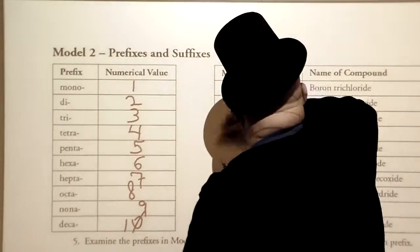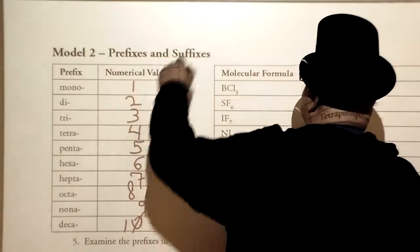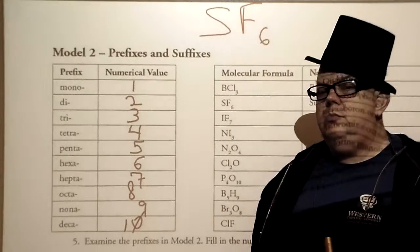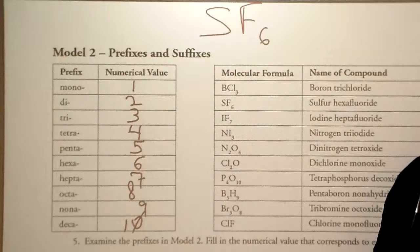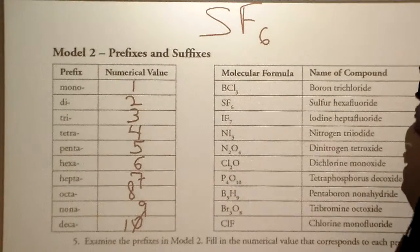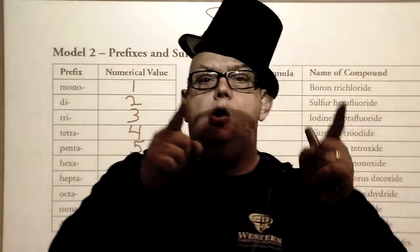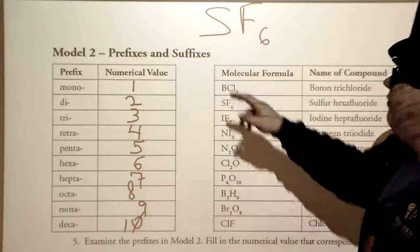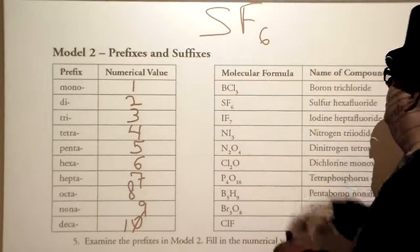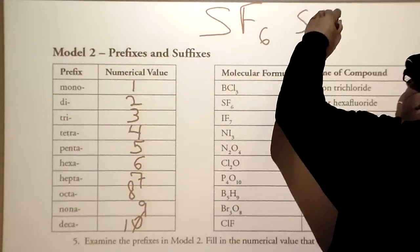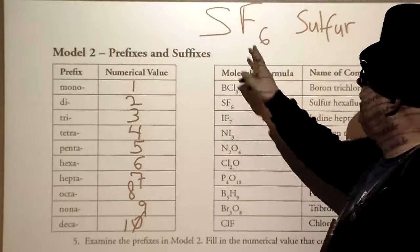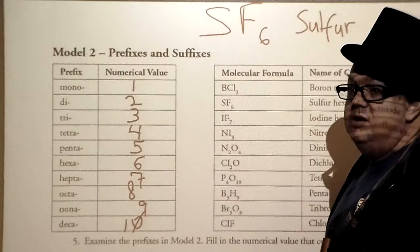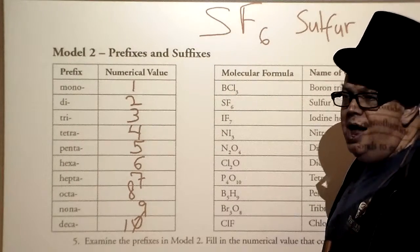So that's one example there. Let's go for another one. Let's go for SF6. Now, S, you probably recognize as sulfur. So, but are we going to say monosulfur? No, we don't, because remember, there's only one sulfur. You never put mono in the front, ever. So we're going to say sulfur.